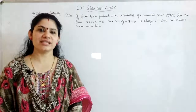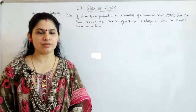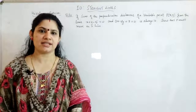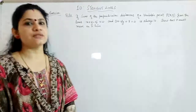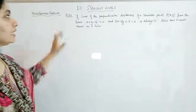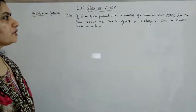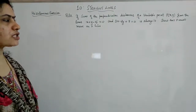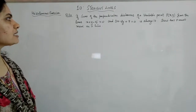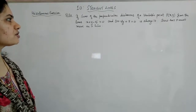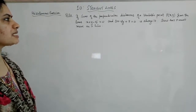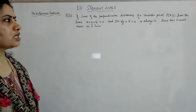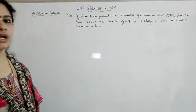Hello everyone. Today we will be discussing the remaining problems of the miscellaneous exercise of chapter 10, straight lines. The first question we are dealing with is question number 20: if the sum of the perpendicular distances of a variable point P from the lines x + y - 5 = 0 and 3x - 2y + 7 = 0 is always 10, show that P must move on a line.